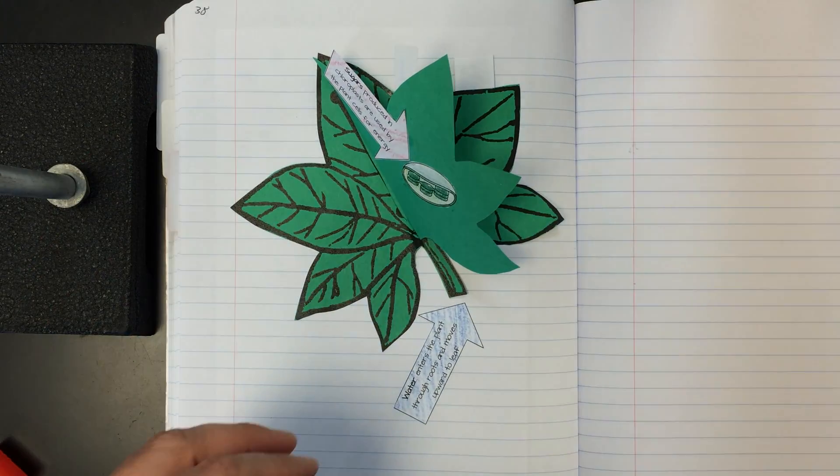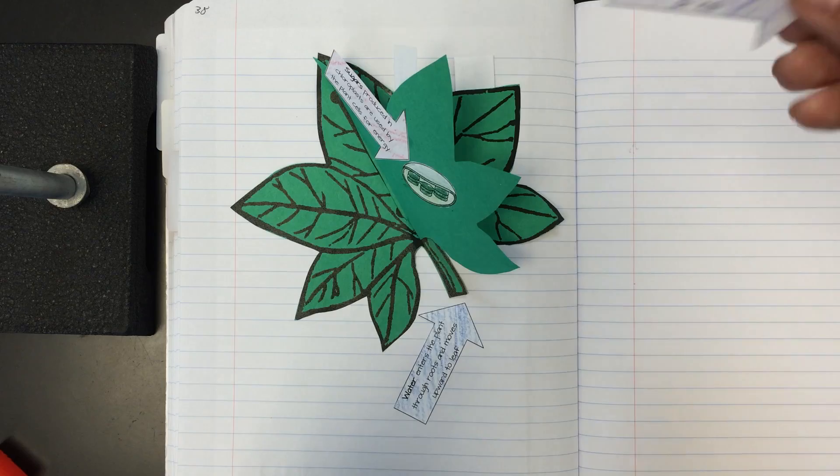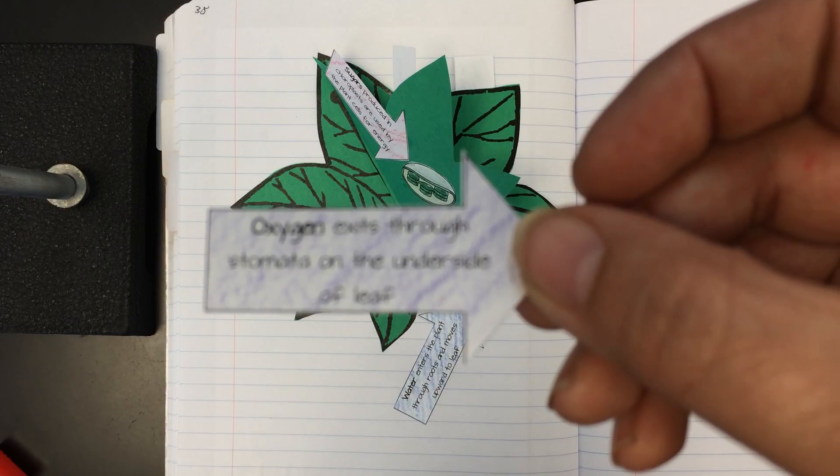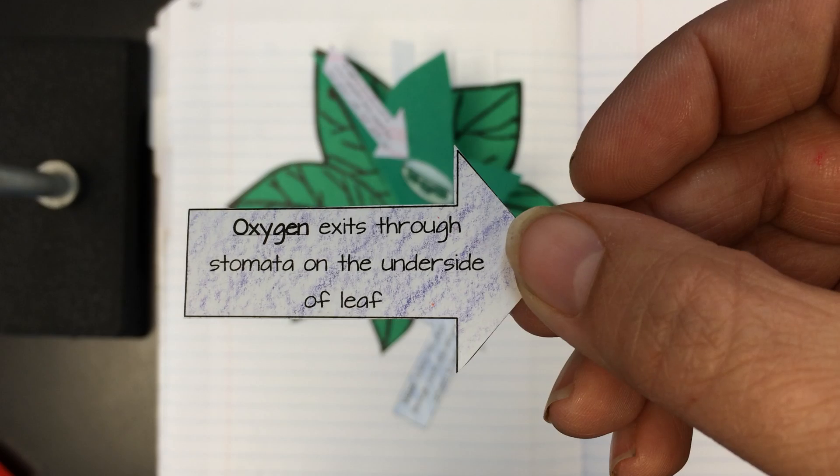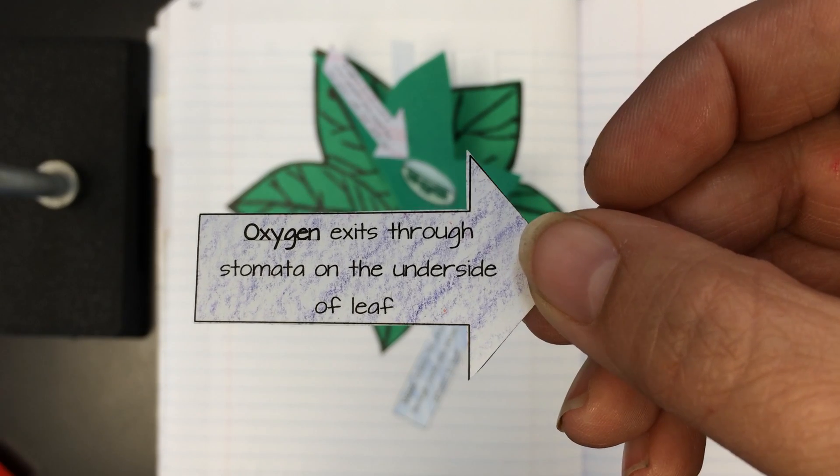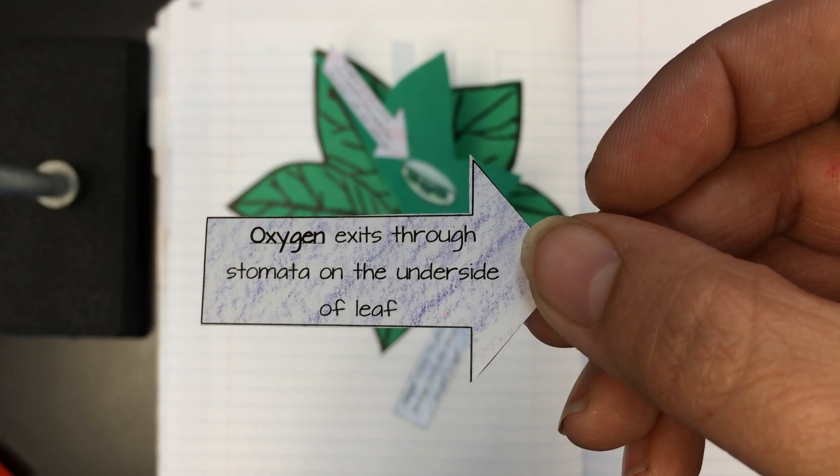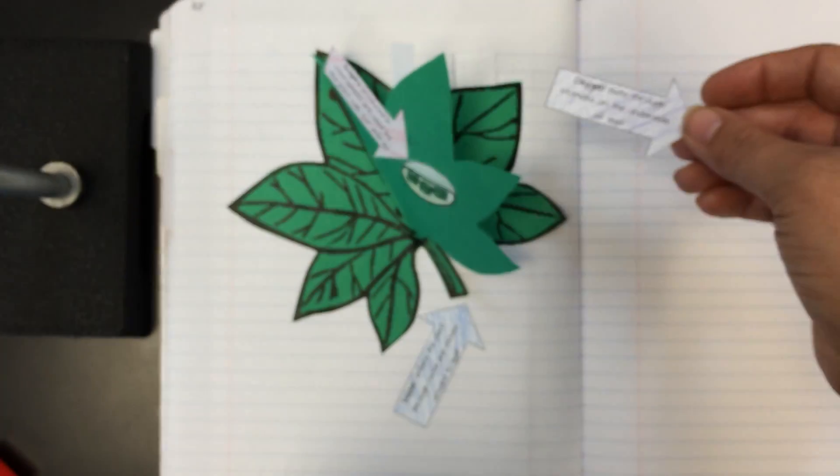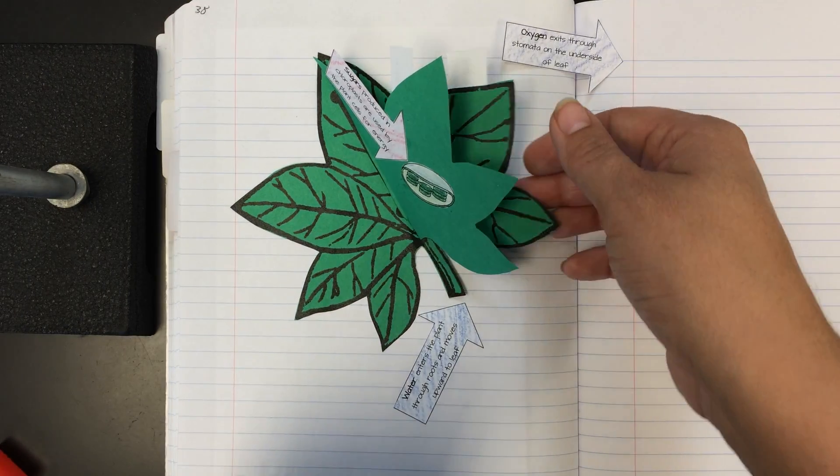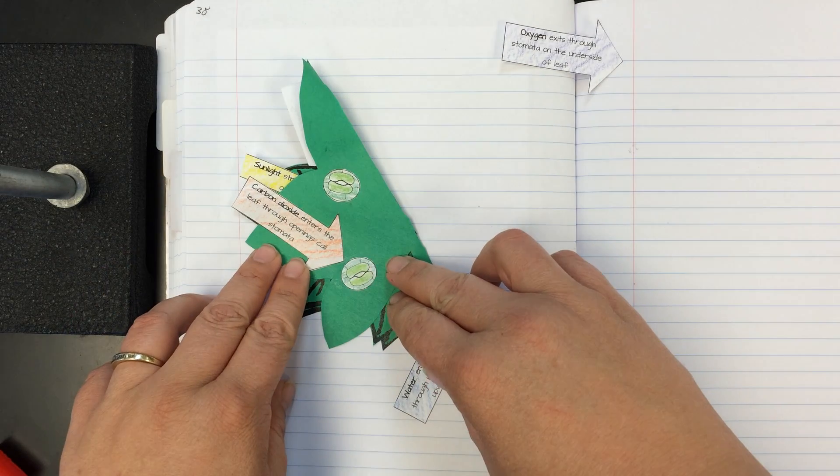And we've got one arrow left, which is the oxygen arrow. Oxygen exits through stomata on the underside of the leaf. So the underside of our leaf again was that right side that we left open. And what's underneath the leaf? Stomata!